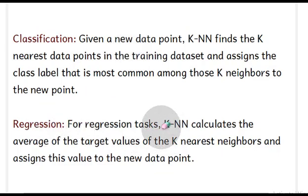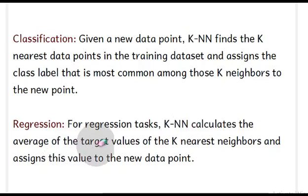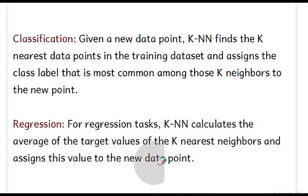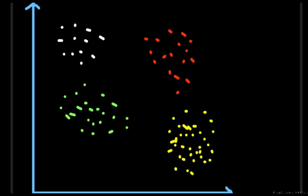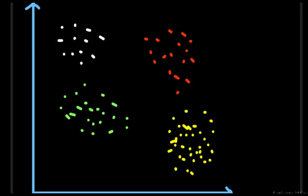In regression, KNN calculates the average of the target values of the K nearest neighbors and assigns this value to the new data point.